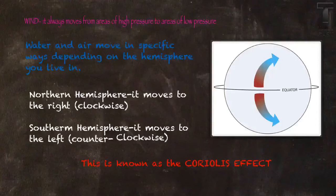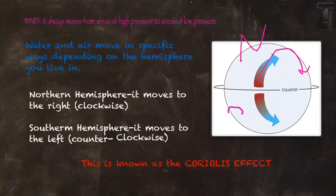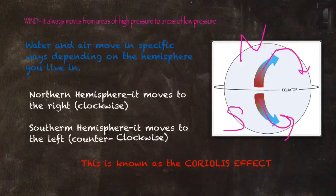So water and air move in specific ways depending on the hemisphere that you live in. If you live in the northern hemisphere, everything's going to move to the right or clockwise. If you live in the southern hemisphere, everything's going to move to the left or counterclockwise. And this is what's known as the Coriolis effect. What I want you to think about is the toilet. If you live in the northern hemisphere, you flush the toilet, look at the water. It's going to move clockwise. If you ever go to the southern hemisphere and you flush the toilet, it's going to go counterclockwise, and that's pretty neat.